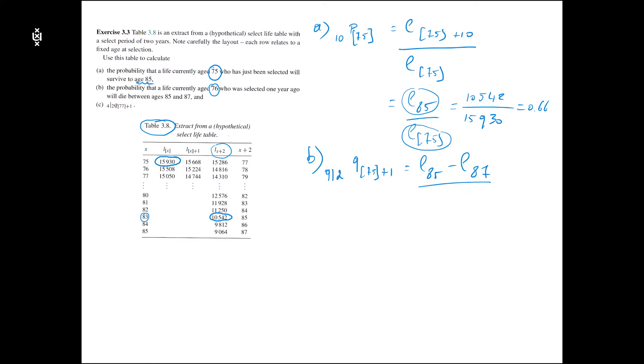This is the number of people that died between 85 and 87, divided by how many people I had at the start, which is the number of people that were all selected at age 75 but are now age 76.